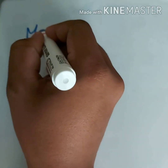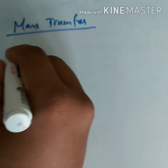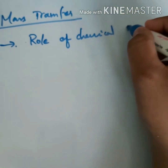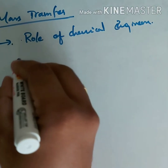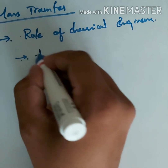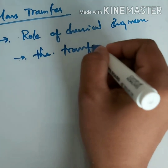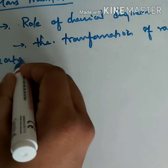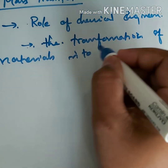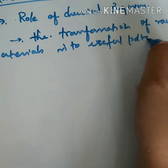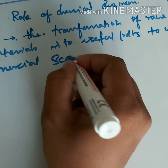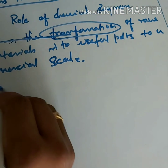Good morning. We will start with the topic mass transfer. Before going to the topic, we will first discuss the role of chemical engineers. In every chemical industry, the role of chemical engineers is the transformation of raw materials into useful products at a commercial scale.